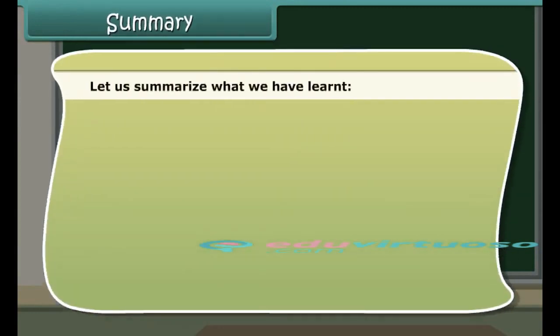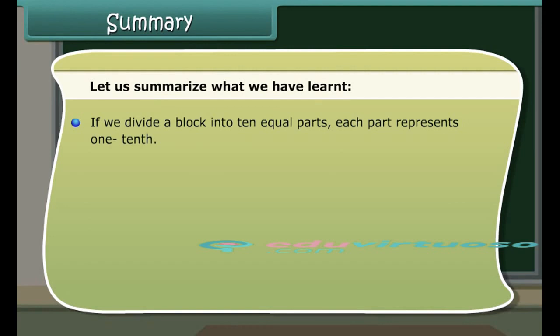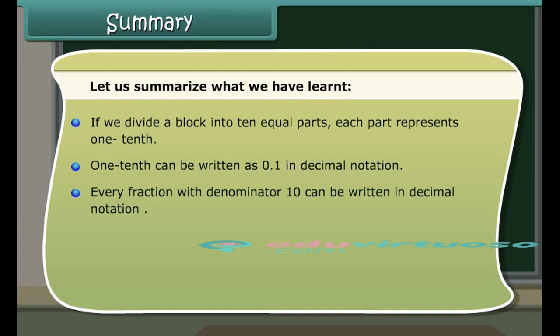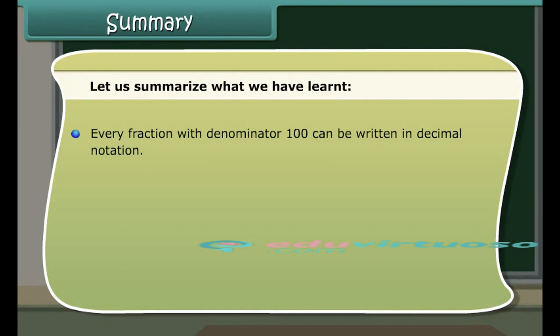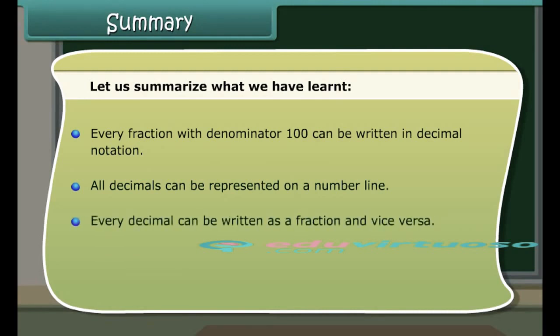Let us summarize what we have learned. If we divide a block into 10 equal parts, each part represents 1 tenth. 1 tenth can be written as 0.1 in decimal notation. Every fraction with denominator 10 can be written in decimal notation. All decimals can be represented on a number line. Every decimal can be written as a fraction and vice versa. Any two decimals can be compared among themselves.